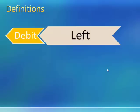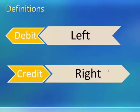The first thing we need to do is define two key terms. The first term is debit. Debit simply means left. The second term is credit, and credit simply means right. Many students start studying accounting with preconceived notions about the meanings of the words debit and credit. These notions come from interactions with banks or credit card companies. It's best to just forget those preconceived notions and accept that debit means left and credit means right.